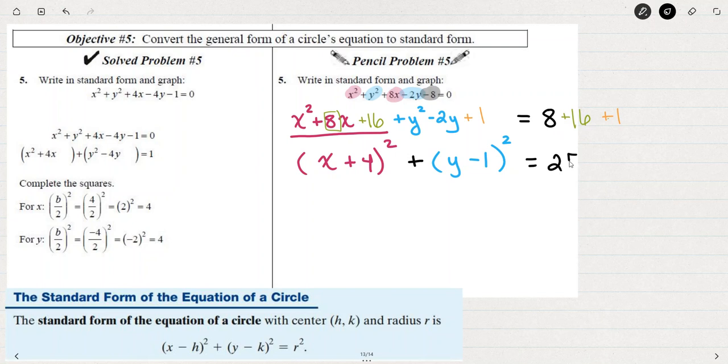I can see that the center of the circle, H K, is not positive 4. When I see this plus 4, remember that the formula shows the minus an H to subtract H. So if it's a positive 4 that we see, we want the opposite, negative 4. And then 1. So the center is at negative 4, 1. And the radius is the square root of 25 or 5.